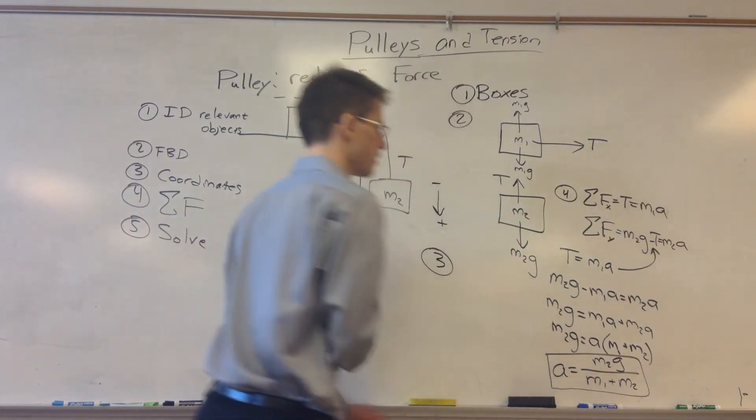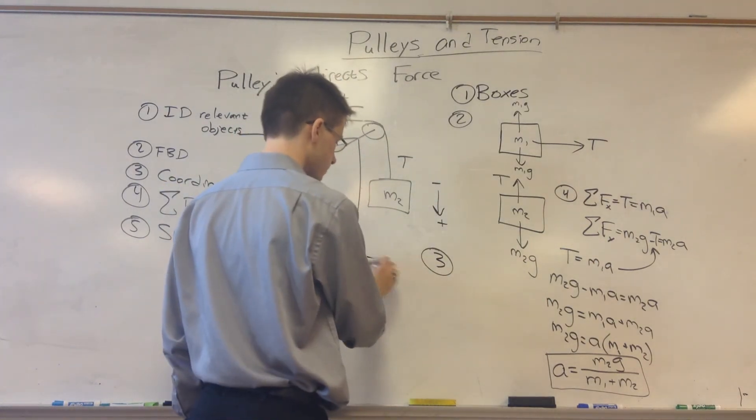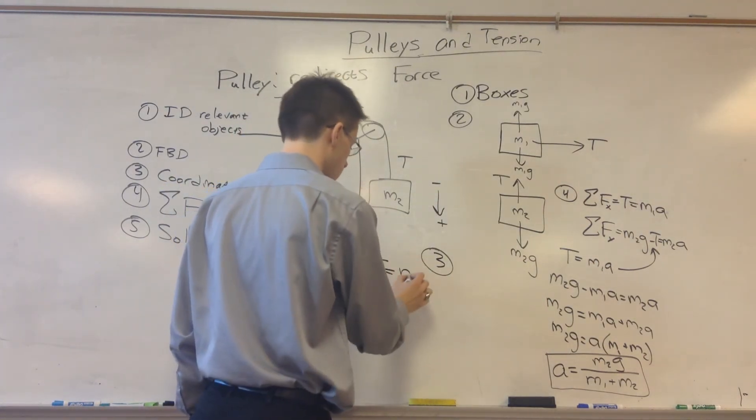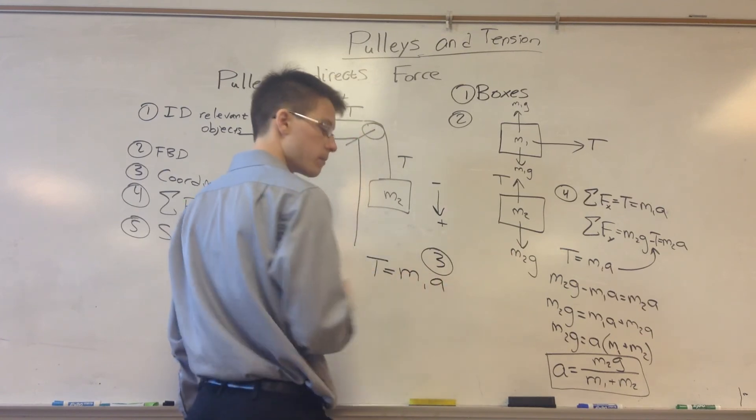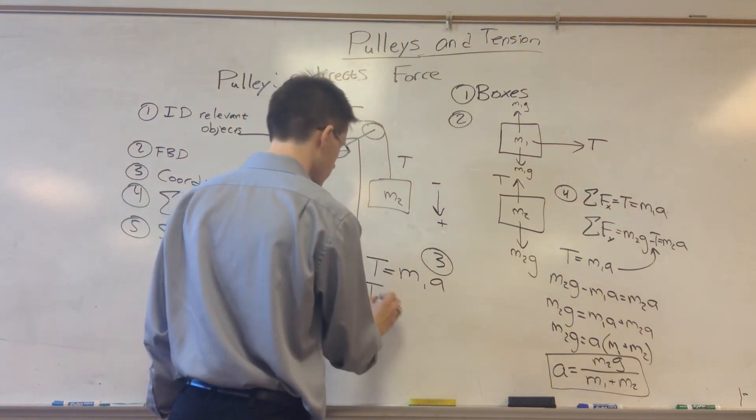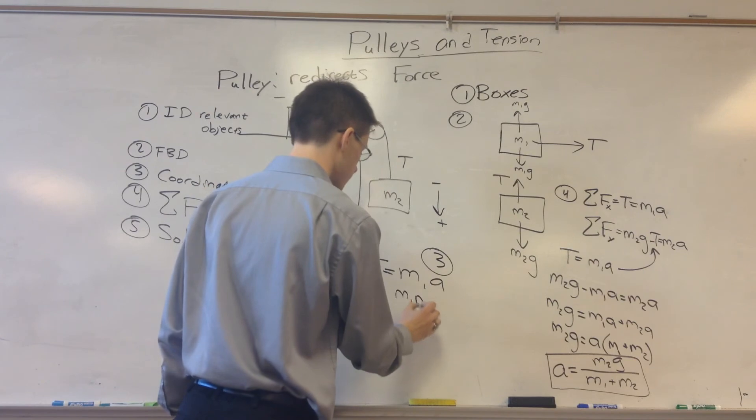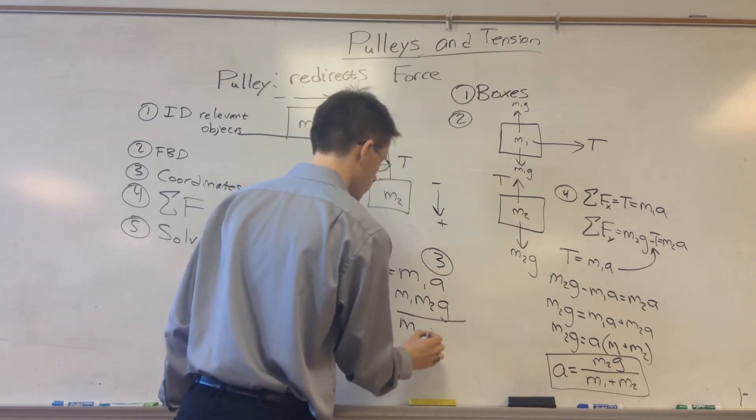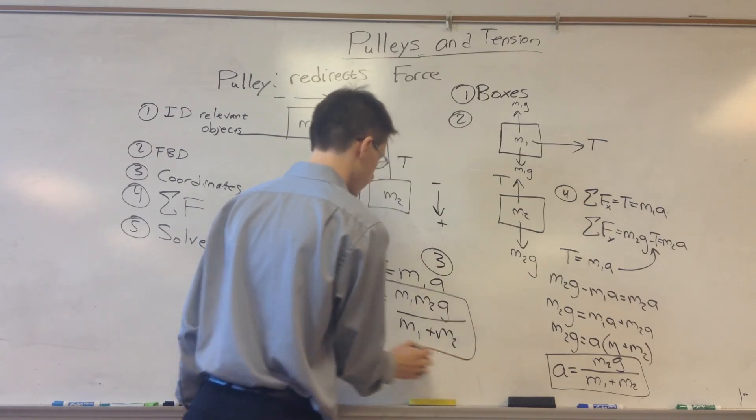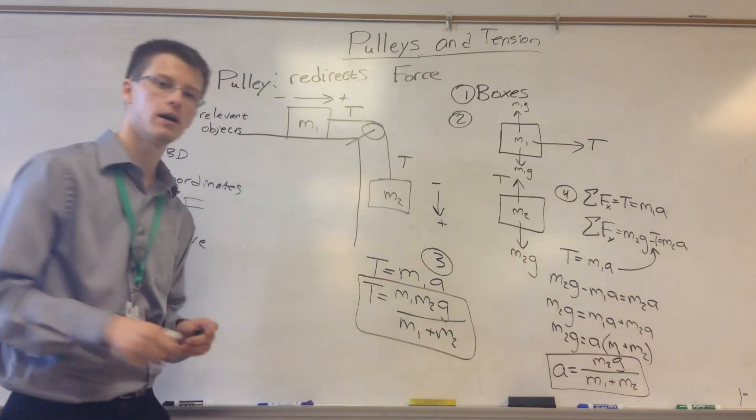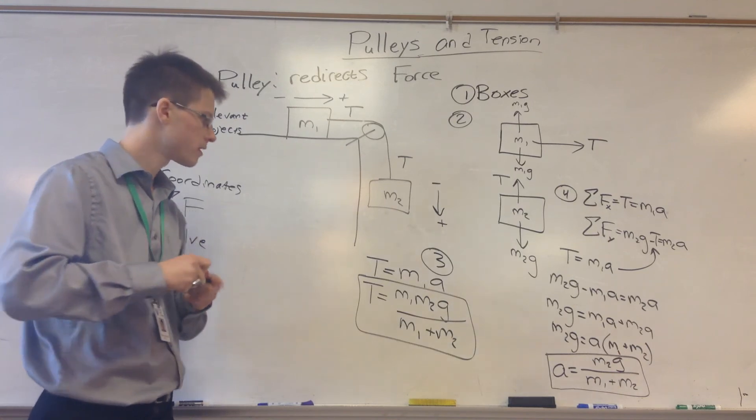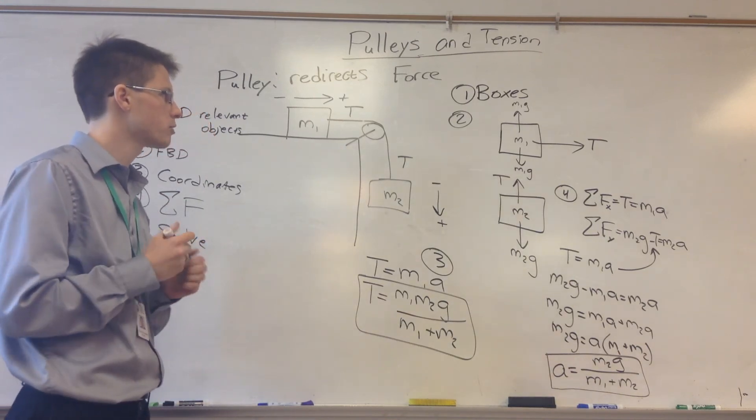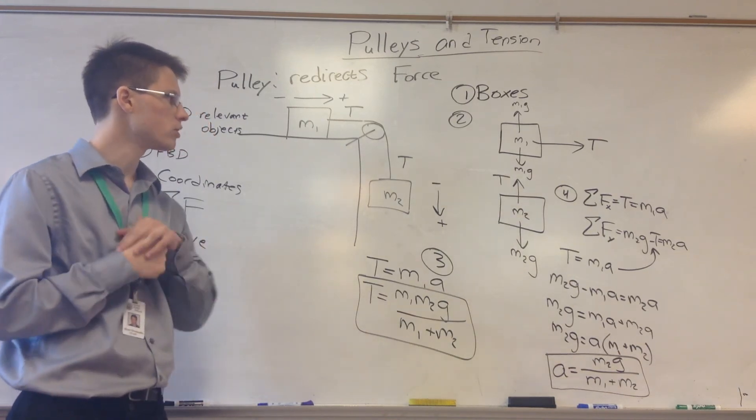We're not done yet though, because we also want to find tension. Tension is equal to m1 times a. So we've found a, now we can plug it back in. Our tension is going to be m1 times m2 times g divided by m1 plus m2. And that's the amount of force that the rope is exerting on the blocks.